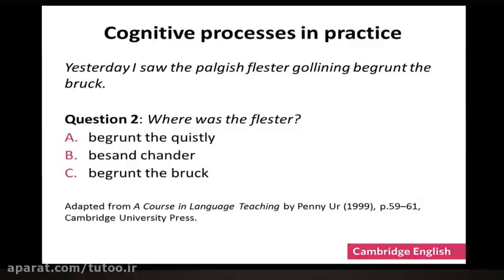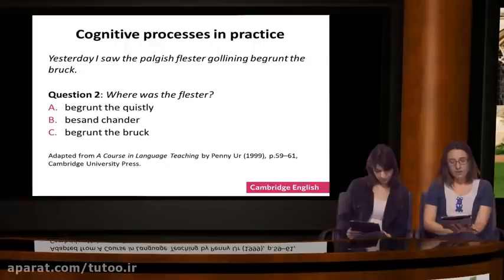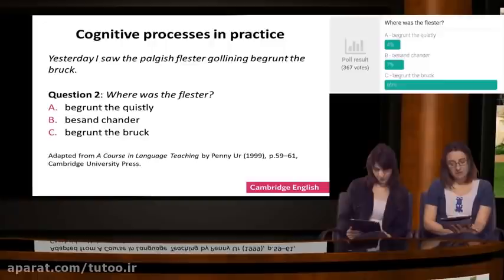Now we're going to stay with the same sentence, but here's another question. Where was the flester? Is it A, begrunt the quistly; B, besand chander; or C, begrunt the brook? Again, read the sentence and choose A, B or C. The vast majority, 91%, have chosen C, begrunt the brook, and that is actually the correct answer.